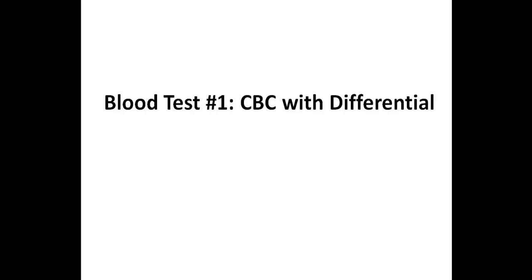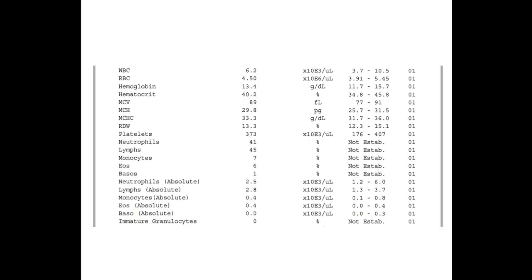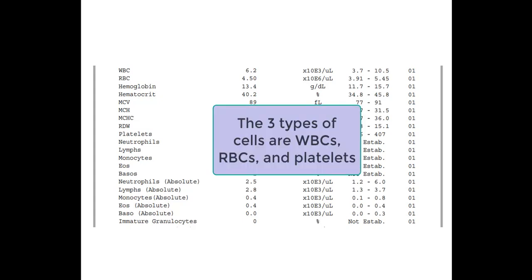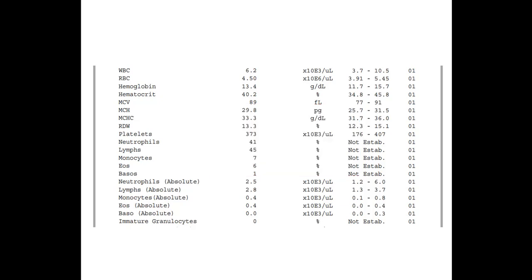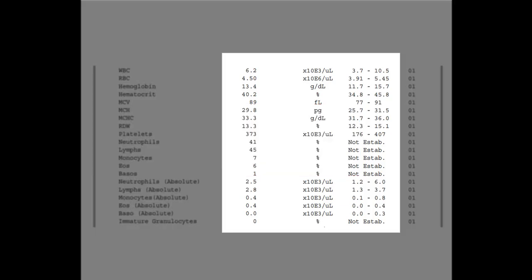So with that being said, the first blood test I'd like to discuss is a complete blood count, also known as a CBC, with differential. Be on the lookout for another video where I'll discuss this test in greater detail. A CBC evaluates the cells in the bloodstream, and it looks at three main types of cells, which include white blood cells, red blood cells, and platelets. To the right of each marker is the value, and to the far right you can see the reference range of each marker.